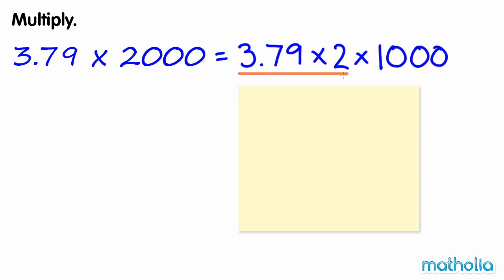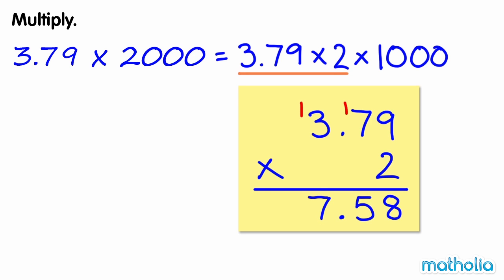First, let's find 3.79 times 2. 3.79 times 2 equals 7.58.